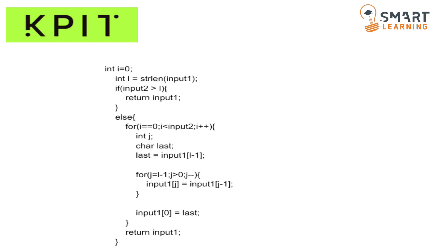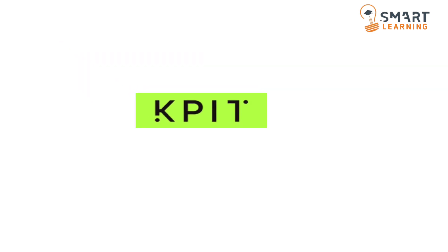This is the code for the right rotation. First I am calculating the length of the input string, because if the length is less than the number of characters to rotate, we return the input string as it is. In the else case, I am taking one for loop to iterate the input string. I am storing the last value in a variable, then replacing the last character to the first character position using another for loop. After all rotations are done, I am returning the string.